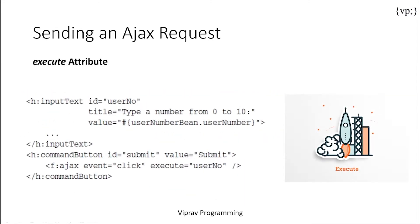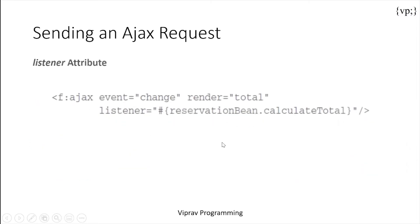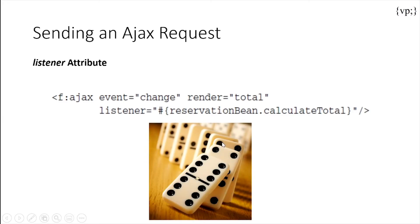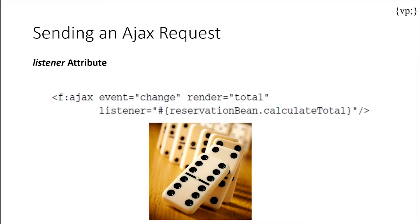There's then the execute attribute, where this code tells us that the input text component named user number is to run when the submit button is clicked. Then there's listener attributes, which refers to a method that is executed due to an activated AJAX action on the client side. Whenever there is a method that is executed, it will execute this method right here. It's kind of like a domino effect, which allows AJAX to be extremely dynamic — not only working with input from the user, but also working with stuff that runs in the background as well.